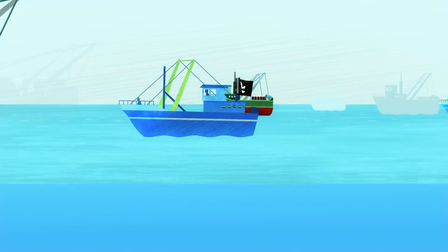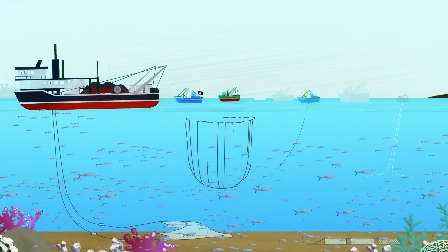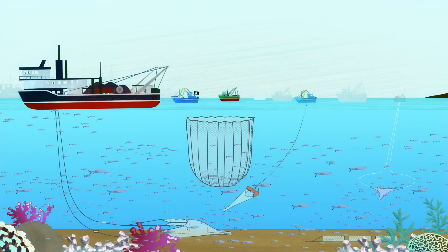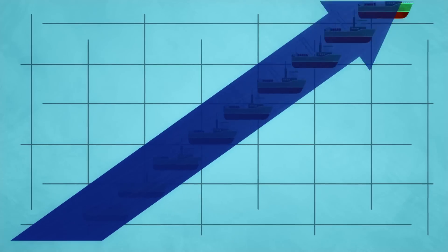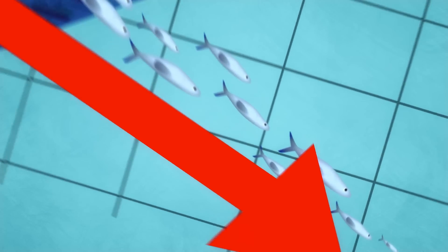With too many boats, too few regulations and not enough policing, fishing practices became excessive and destructive. We were putting in more effort, but catching less fish. Stocks were declining. The oceans were reaching a critical tipping point.